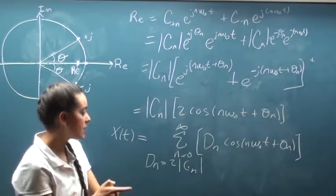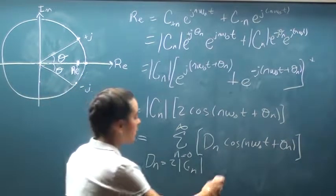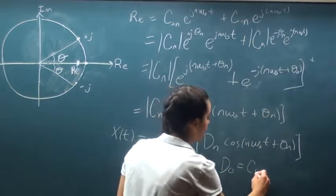Also, at the origin— I'm sorry, when the angle is zero, we can define d naught as equal to c naught.